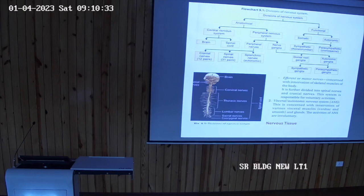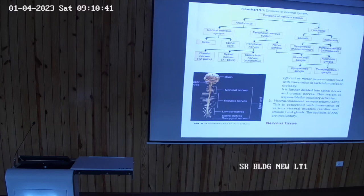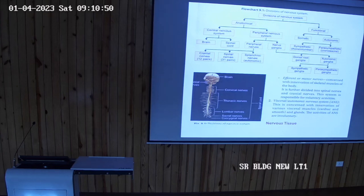The neurons are the structural and functional unit of the nervous system. In human beings, there are about ten million neurons present in the nervous system.